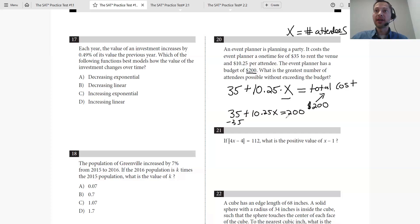35 plus 10.25X equals 200. Let's subtract 35 from both sides. 10.25X equals 165. Divide by 10.25, you have X equals 16.09. They're looking for the greatest number of attendees without exceeding the budget. You can't have a fraction of attendees, so the answer is just 16.